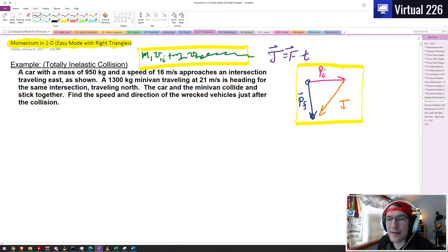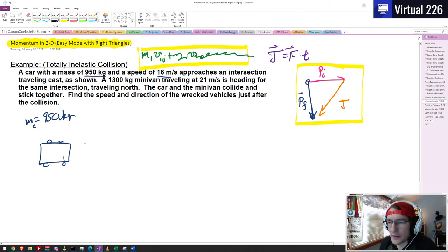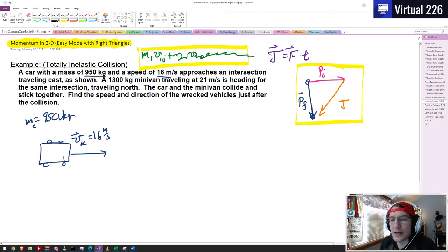What we have in this problem is a car with a mass of 950 kilograms at some speed, 16 meters per second, and it's approaching an intersection traveling east. So what we have, here's my poorly drawn car, I guess we're drawing a top down view, and it has a mass we'll call it mc, mass car, of 950 kilograms, and it has some velocity, so we'll call this the initial velocity of the car, vic of 16 meters per second.